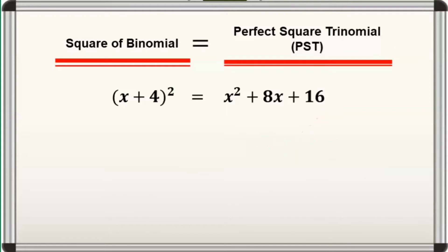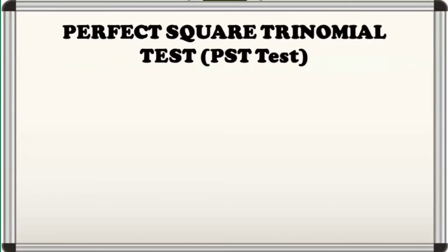Knowing that the result of the square of binomial is a perfect square trinomial, it would now be easy for us to factor out a perfect square trinomial. Its factored form will always be a square of binomial. The question now is, how do we check if the given is a perfect square trinomial?